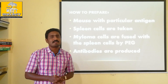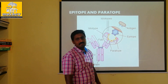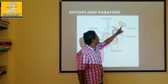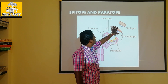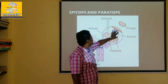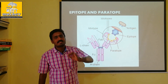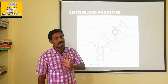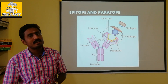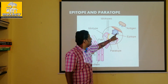The specific binding site on the antigen is called the epitope, and the corresponding site on the antibody is called the paratope. The antibody is shaped to match the antigen. When the epitope and paratope come together, they bind, and the antigen is totally inactivated.